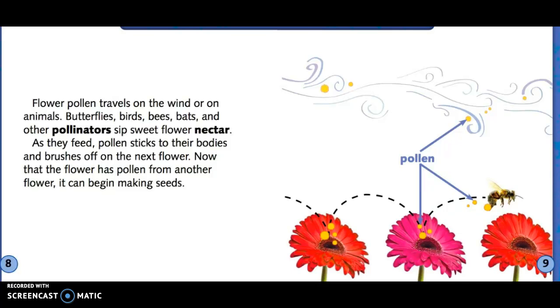In the book, the author showed us pollen moving in two different ways. Look at the top. How is pollen moving from one flower to another? That's right, the wind is blowing.